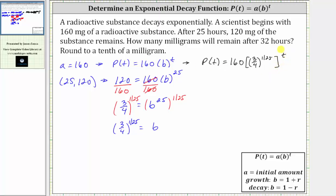Now let's go ahead and simplify this. Notice how here we have powers raised to powers, and therefore we multiply the exponents. 1 over 25 times t is 1 over 25 t, or t divided by 25, and therefore our simplified exponential decay function is P(t) equals 160 times 3 fourths raised to the power of t divided by 25.